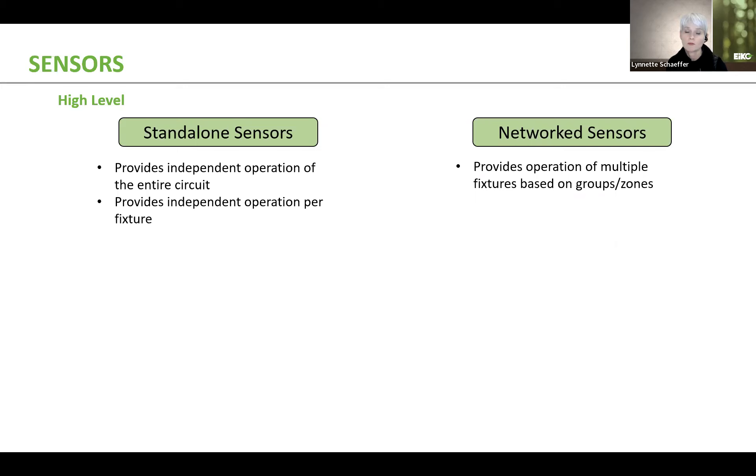Network sensors, on the other hand, provide operation of single or multiple fixtures based on a group or zones of fixtures. And really, the circuitry and the wiring really doesn't matter with a wireless type of network sensor.